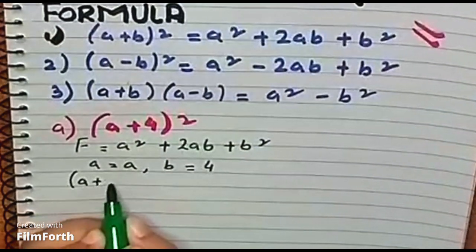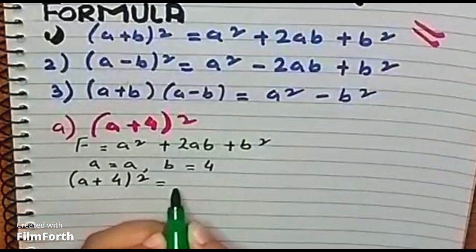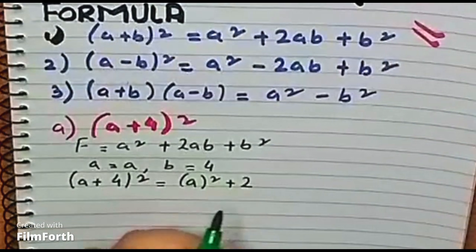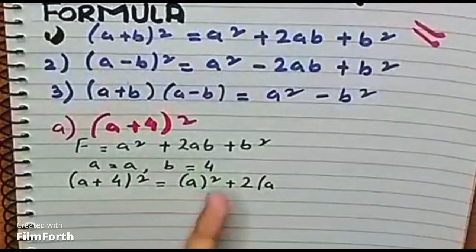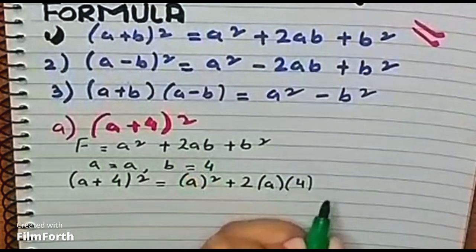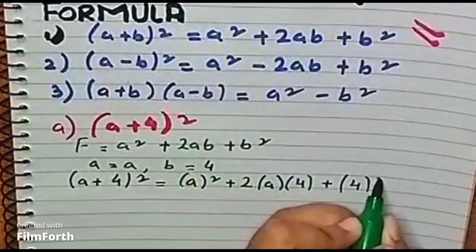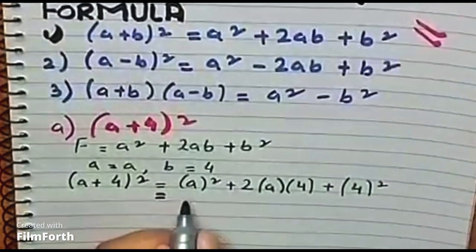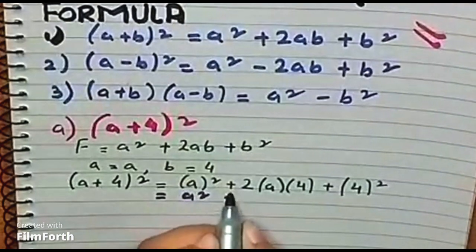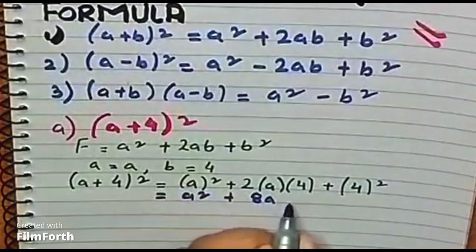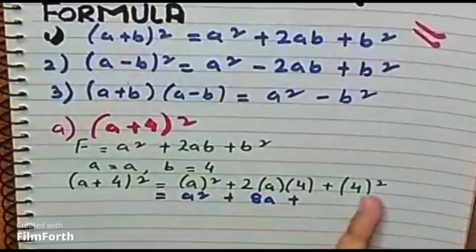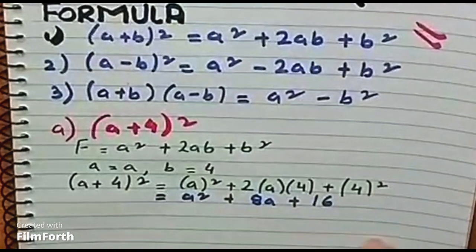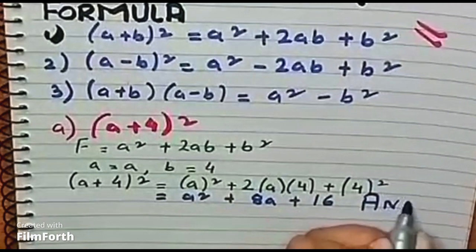So (a + 4)² is equals to a² + 2ab + b², which gives us a² + 8a + 16. That is our answer for the first identity.